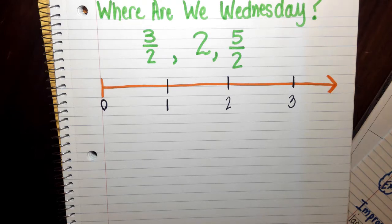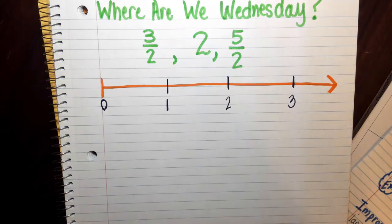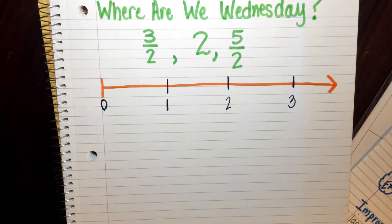Today's Where Are We Wednesday, you are given these three numbers and we need to find where their location is on the number line. So if you can get me started, how or do you know what I should probably do to this number line first? Should I leave it in only whole numbers or do I maybe need to partition it off into some pieces? What do you think I ought to do, Aries?